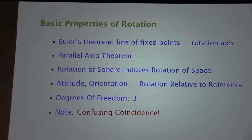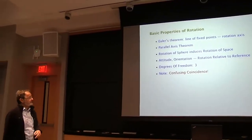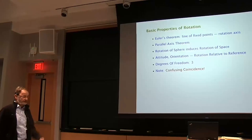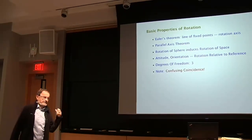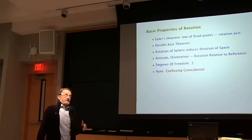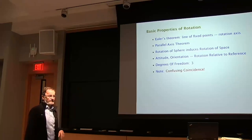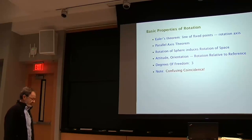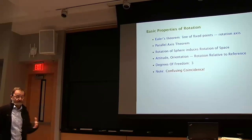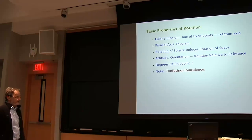The parallel axis theorem says that any rotation about any axis is equivalent to a rotation about an axis through the origin plus a translation. For us, it's convenient to separate translation and rotation this way — when we talk about rotation, we're talking about rotation about an axis through the origin, because we deal with translation separately. And if we figure out how a sphere rotates, we've basically figured out how everything rotates. We can just think of a sphere rotating in space in all possible ways, which corresponds to rotation of space.